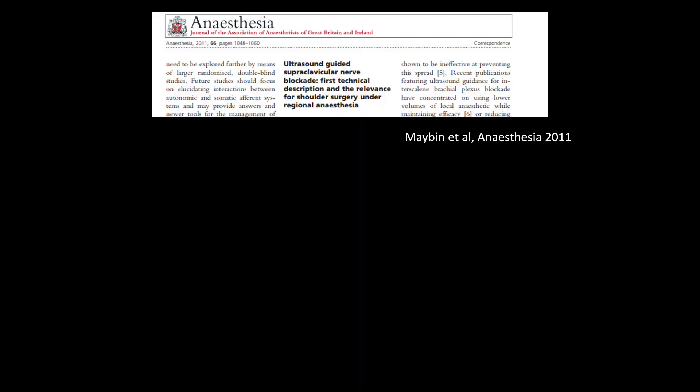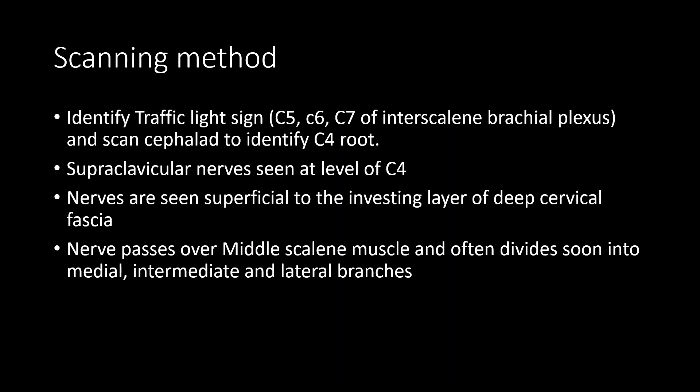The first description of ultrasound guided supraclavicular nerve block was done by Mabin et al. in 2011, where they used a high frequency linear probe to show the supraclavicular nerves right behind the posterior border of the sternomastoid. The scanning method used was to identify the C5, C6, and C7 roots as for an interscalene brachial plexus, then scan cephalad to identify the C4 root as it enters the transverse process. The supraclavicular nerves penetrate the investing layer of deep cervical fascia and rest beneath the platysma and the superficial cervical fascia.